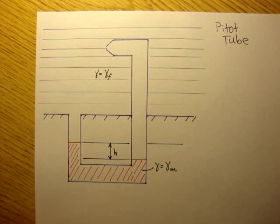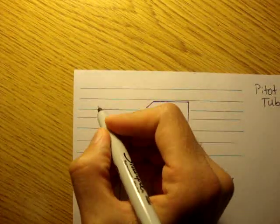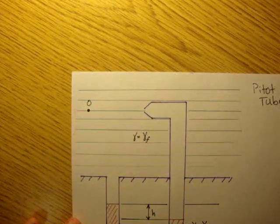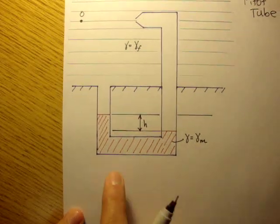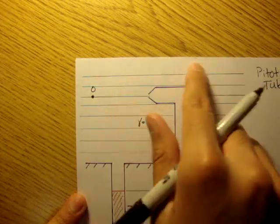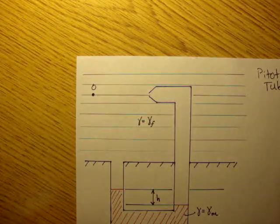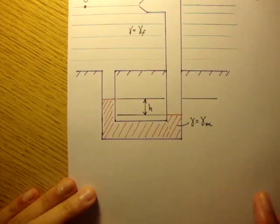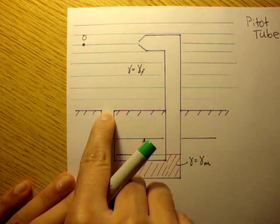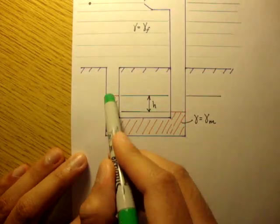We want to find the velocity of these streamlines or the fluid. Let's call this point 0.0, and we want to find the velocity at 0.0. Notice here, the manometer fluid is mercury. We'll call gamma of the air outside gamma sub f. The very first thing to notice is that all of this is in static equilibrium. The air inside this pitot tube and the manometer fluid are completely static — not moving. The velocity inside this tube is 0, which is what's keeping the mercury in place.